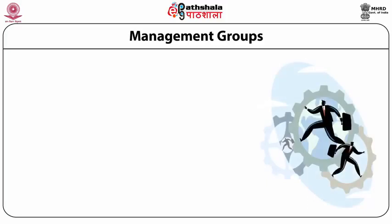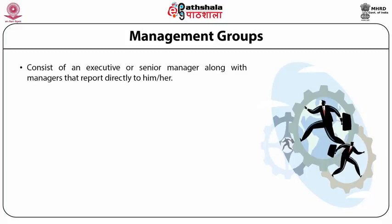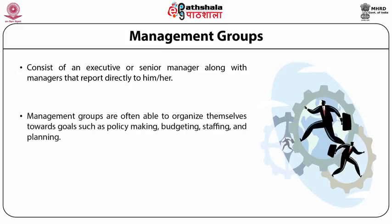The second type of groups are management groups. These consist of an executive or senior manager along with managers that report directly to him or her. Management groups are often able to organize themselves towards goals such as policy making, budgeting, staffing, and planning. They are concerned with all managerial activities — planning, organizing, directing, controlling, coordinating — across various levels from the top level, middle level, and junior level in the organizational hierarchy.